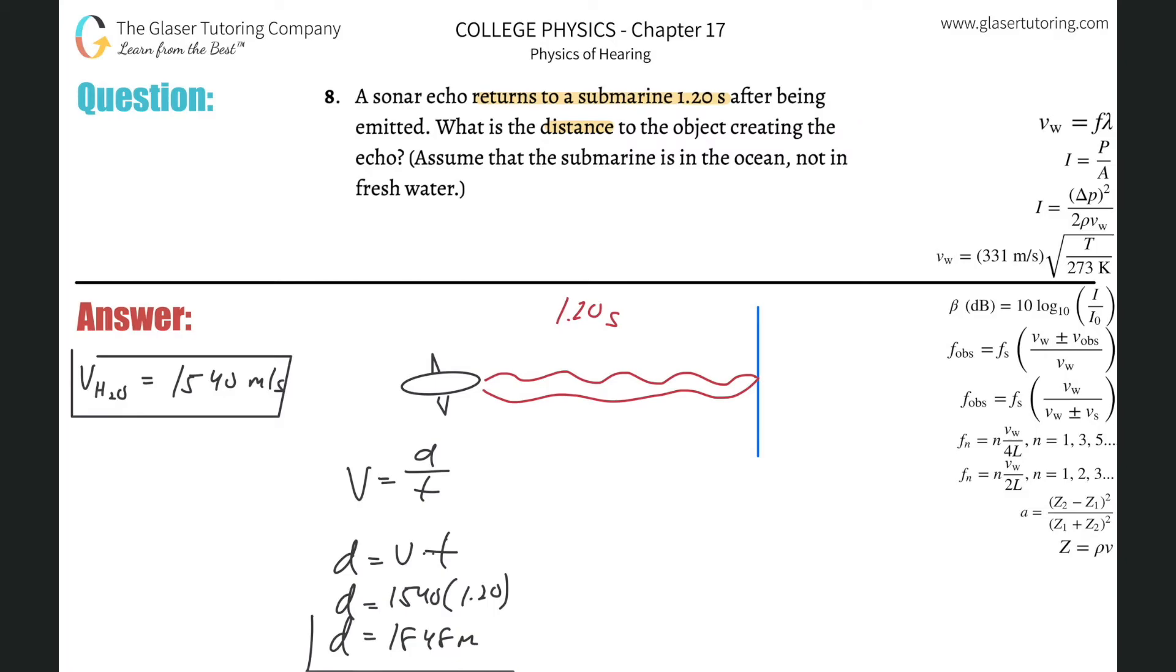the final answer. Why? Because you have to remember this is the total time it took for the wave to travel from the submarine to the object and then return back. So if the velocity is 1540 and it took this amount of time, then the distance we just calculated—1848—is the distance from the submarine to the object and back. So if that's the total distance we calculated, how do we find just the distance from the submarine to the object?